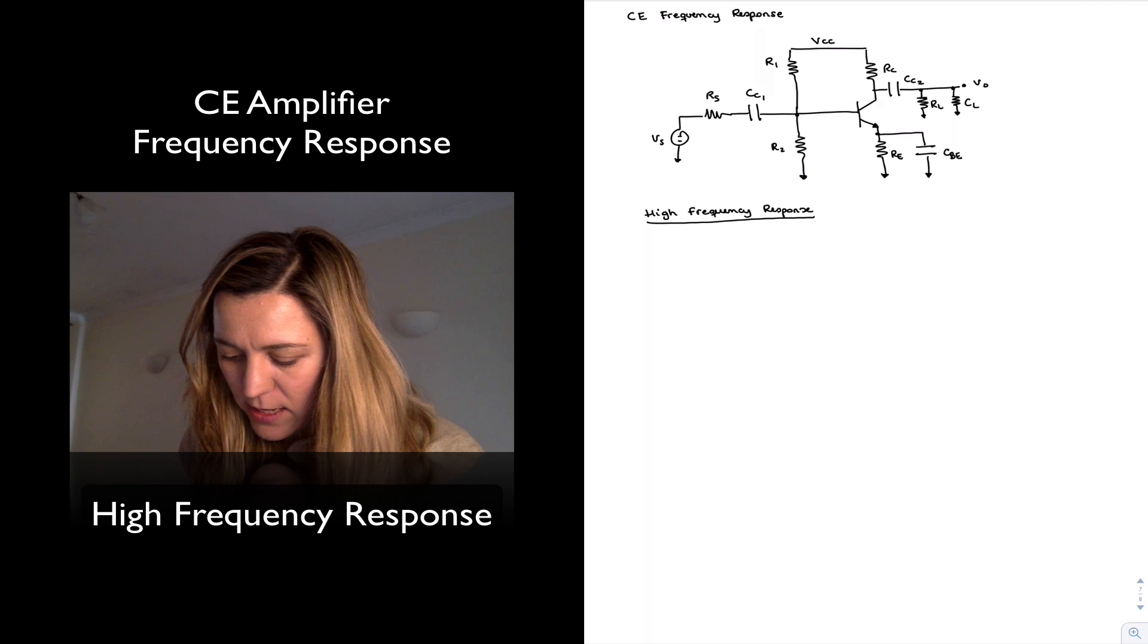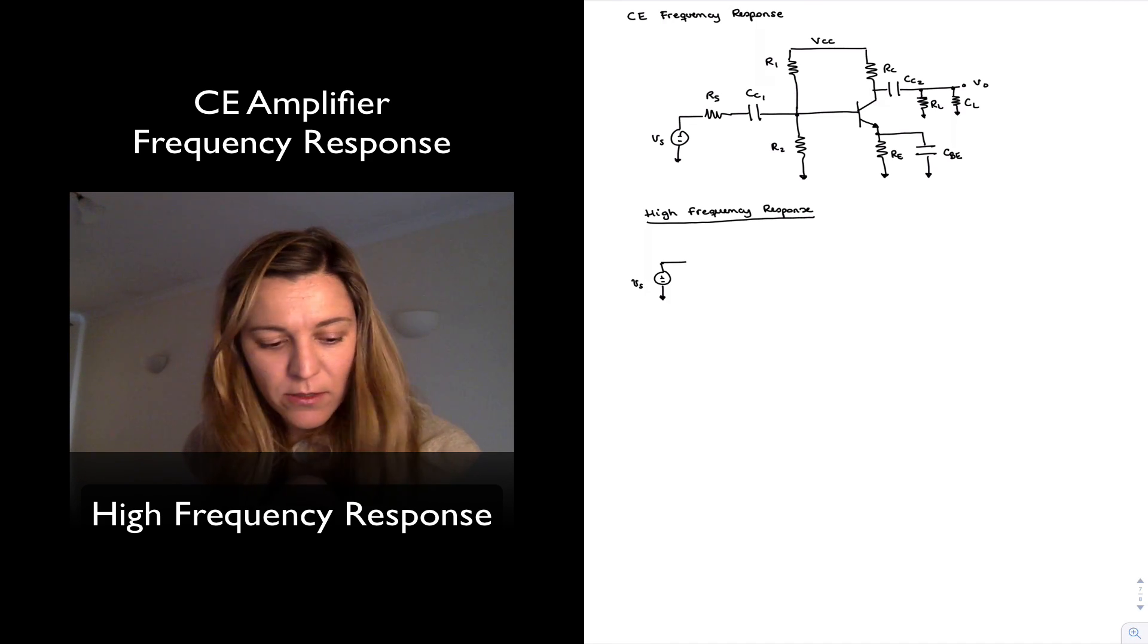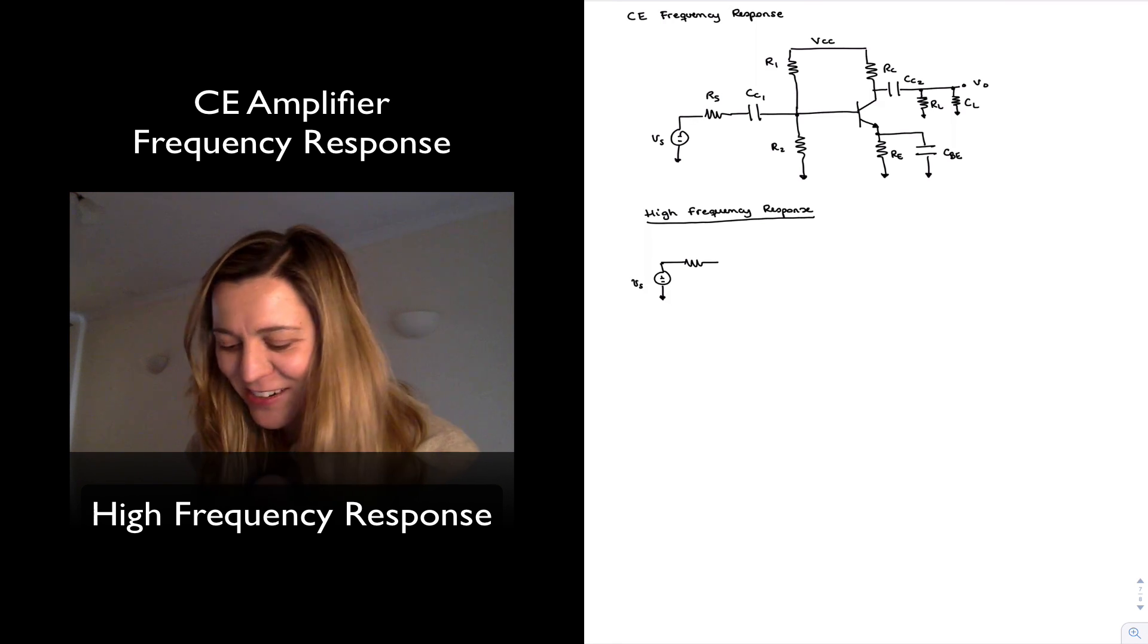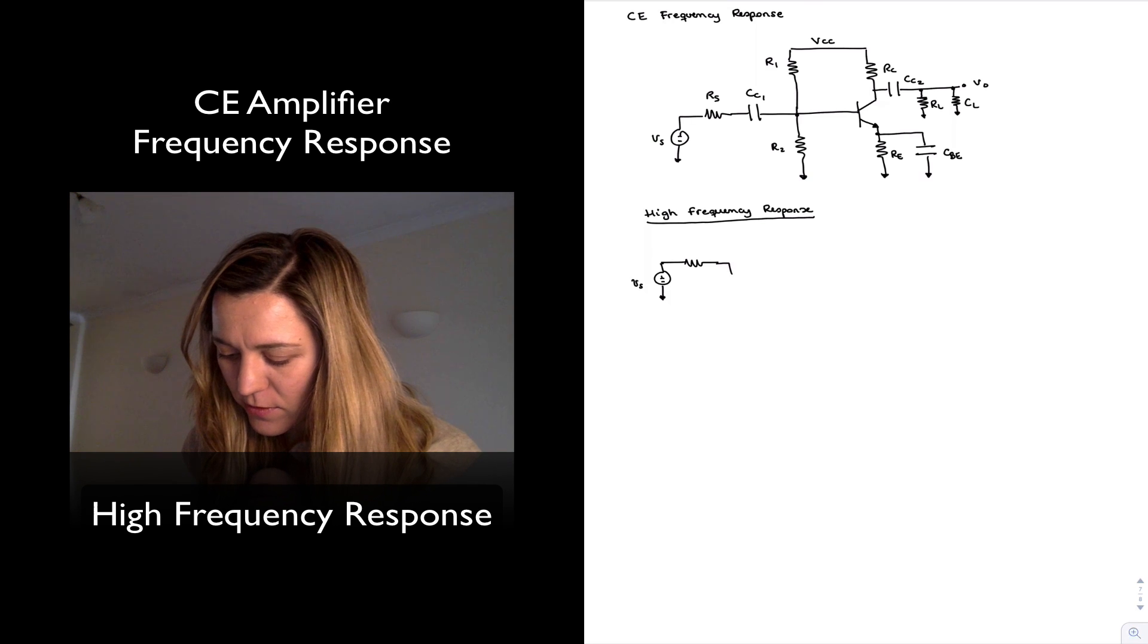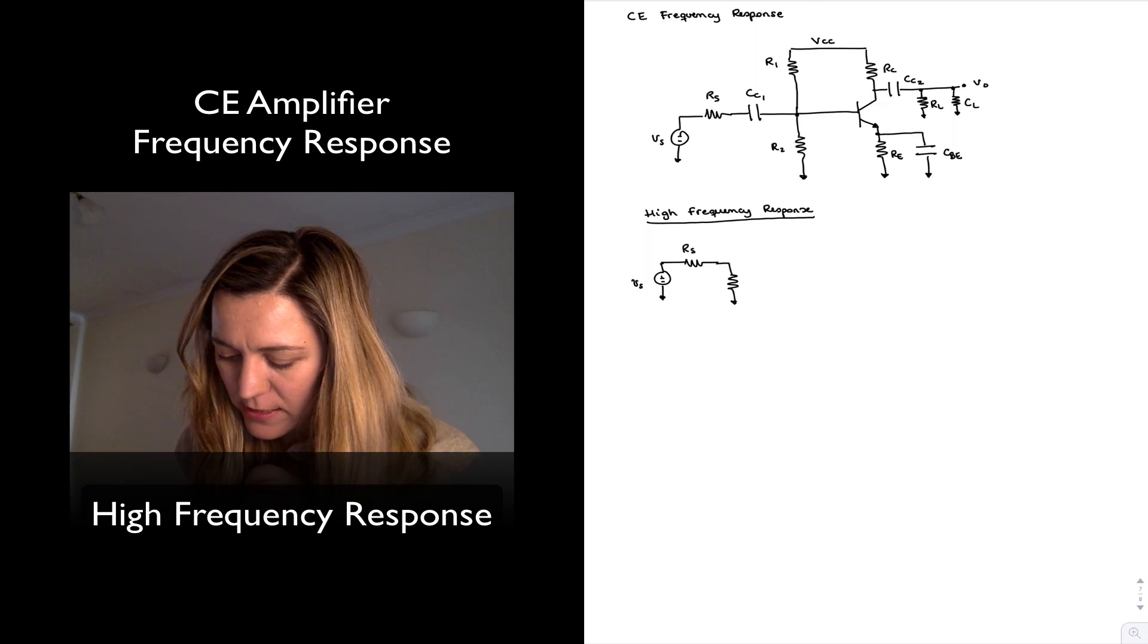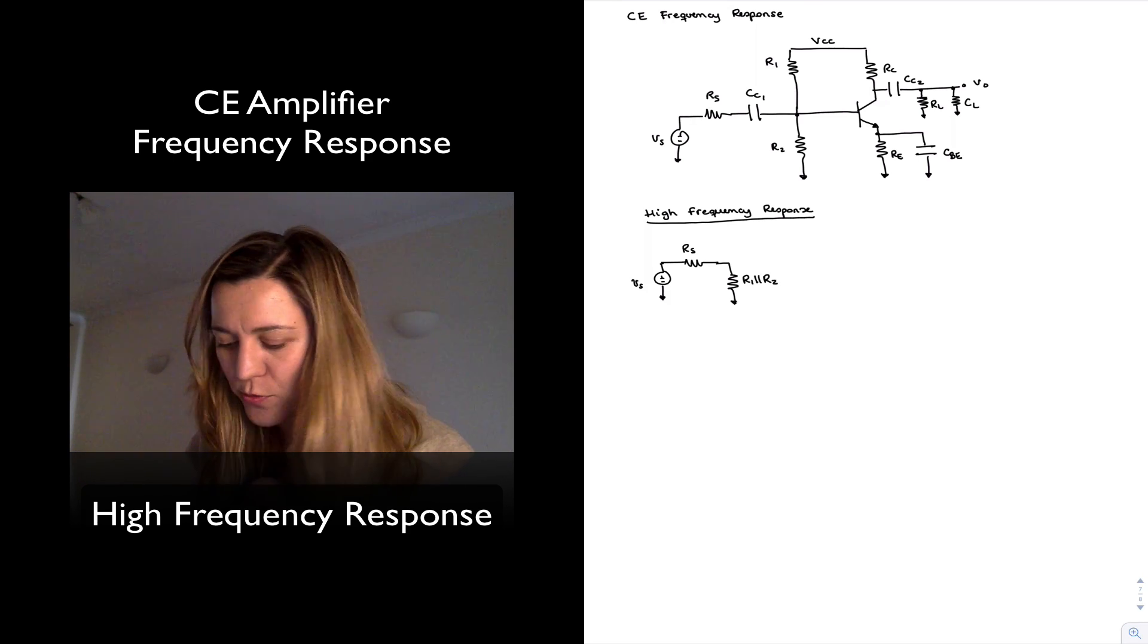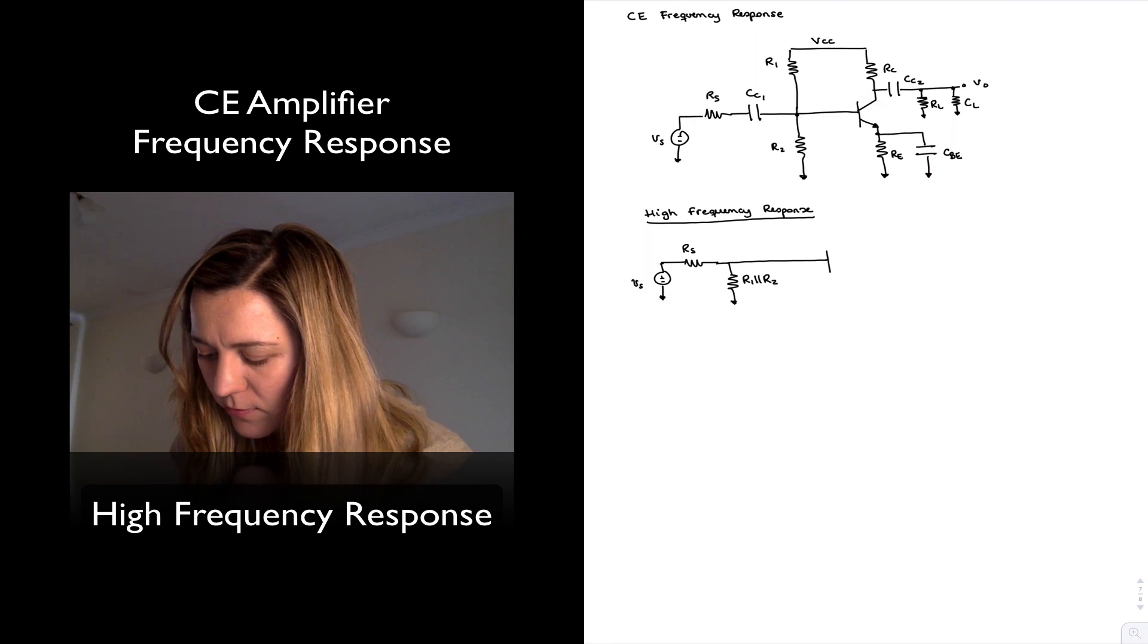So let me go ahead and, so this will be VS. You could call this my high frequency equivalent circuit, I suppose. Then you have... So, this is RS, this is the parallel combination of R1 and R2. I'm going to combine them since they're both going to signal ground. Then I have my BJT transistor.